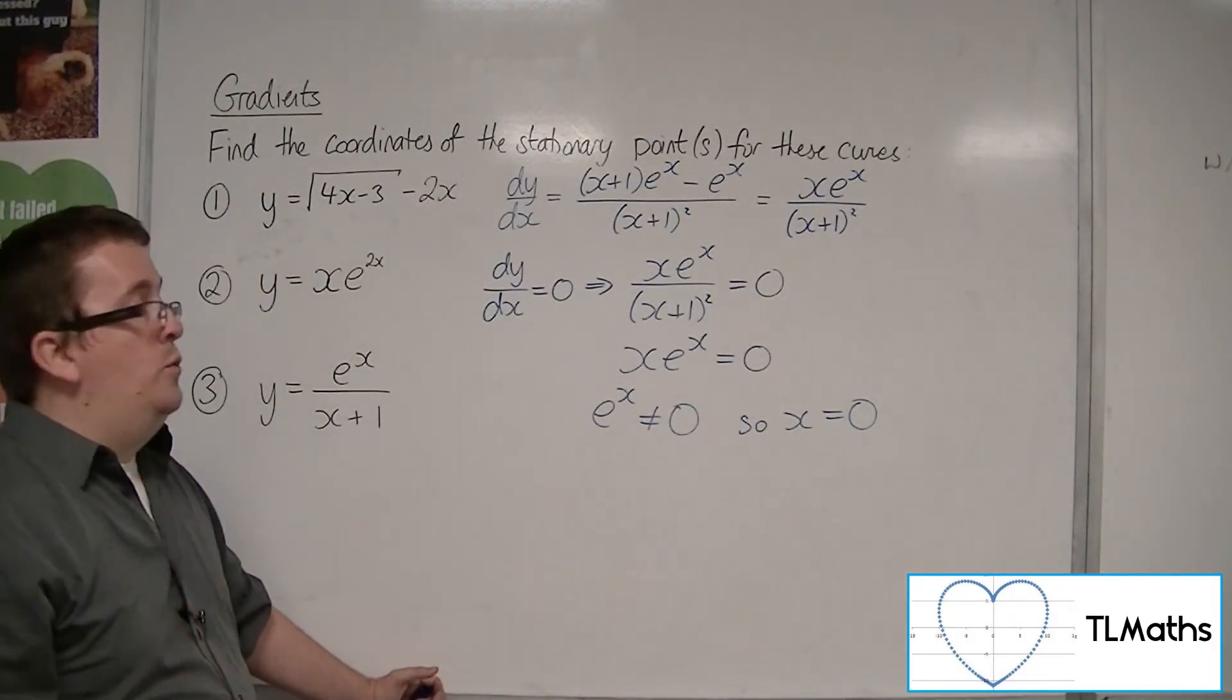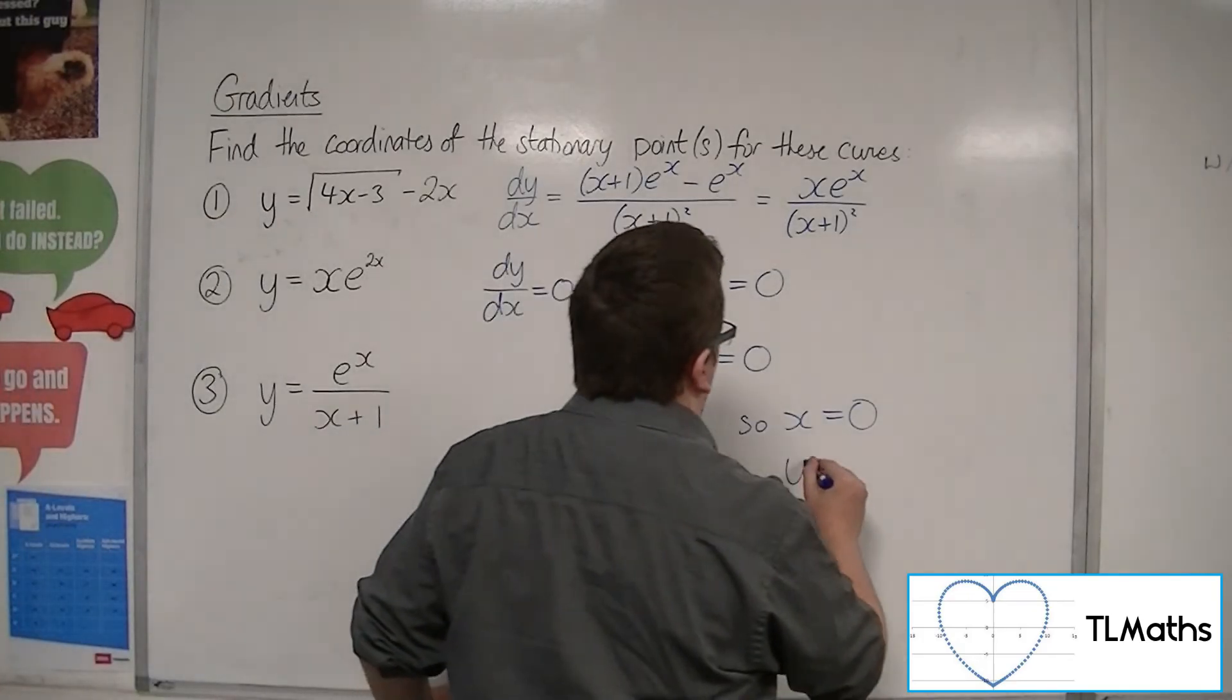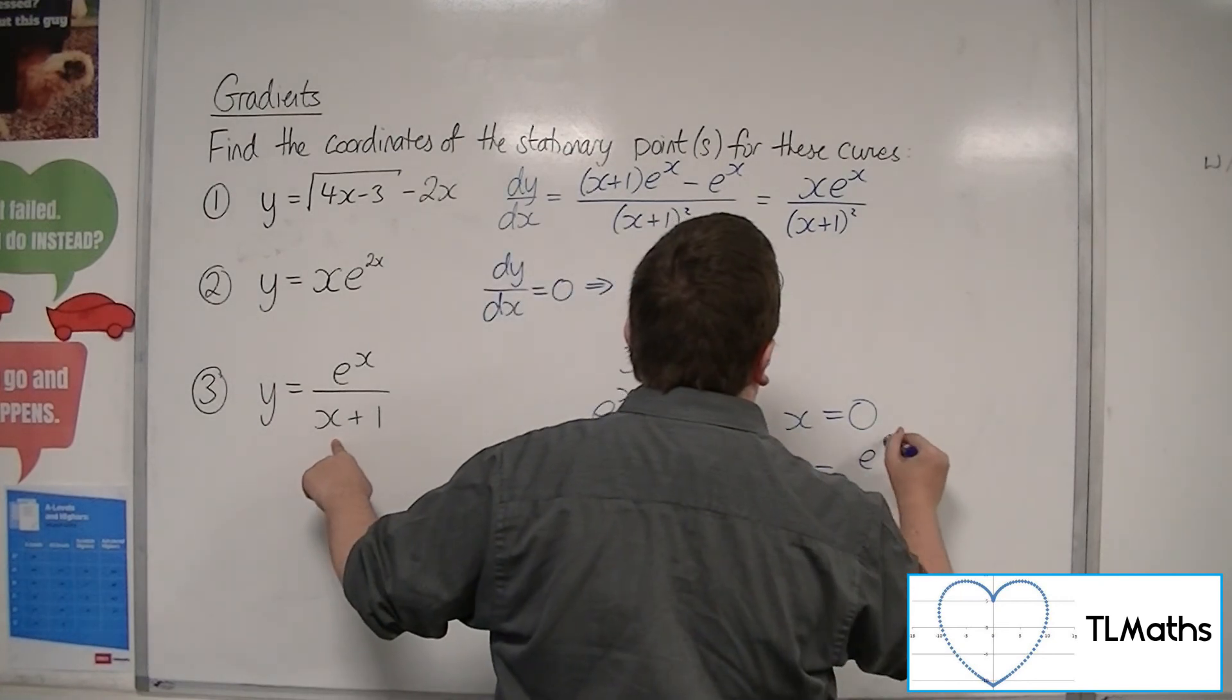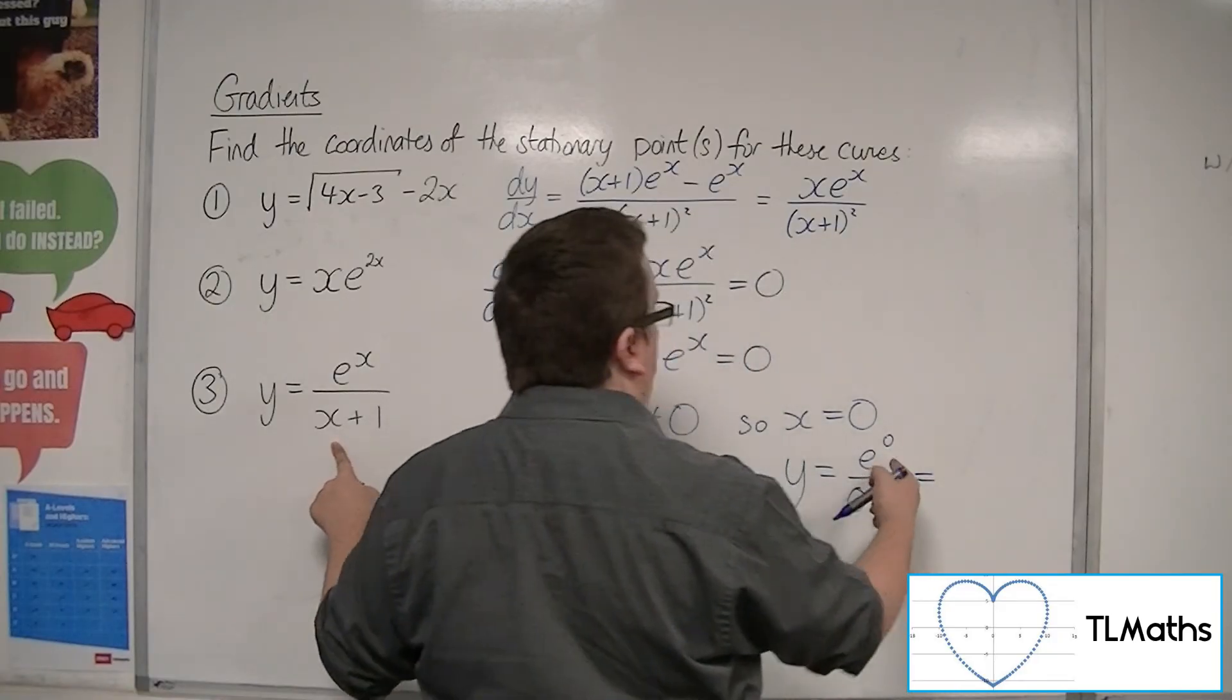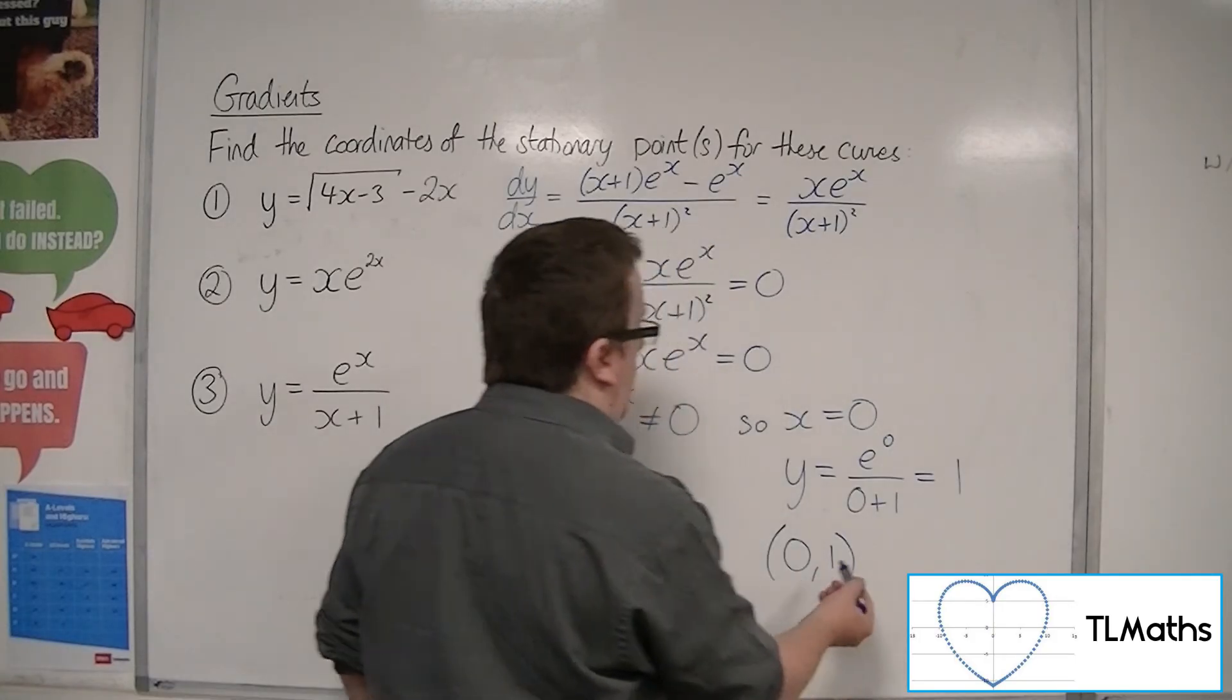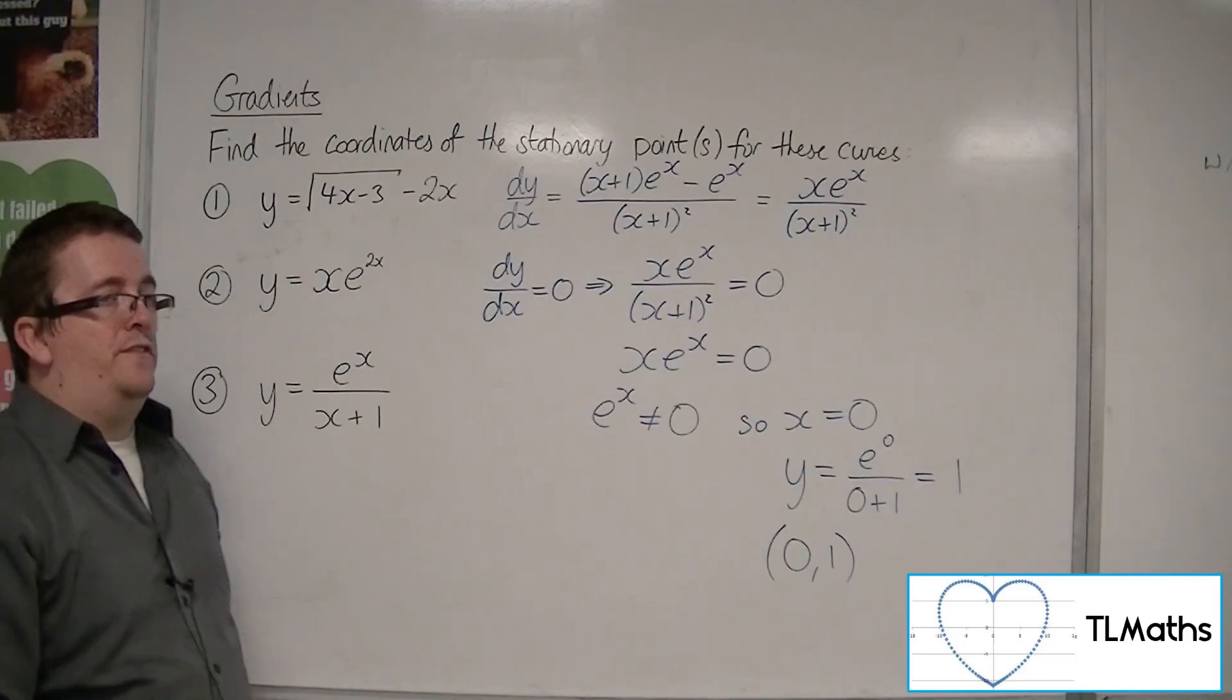So if x is 0, we can substitute that into the curve to get e^0/(0 + 1). e^0 is 1, so we get 1/1, which is 1. So (0, 1), that's the coordinates of the singular stationary point of number 3.